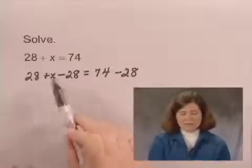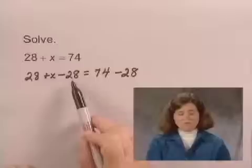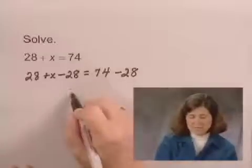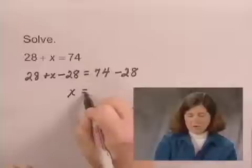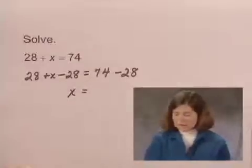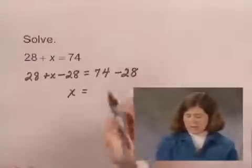On the left-hand side, we have 28 minus 28, which is 0, plus x. So we're left simply with x equals. And on the right-hand side, we carry out the subtraction, and we have 46.